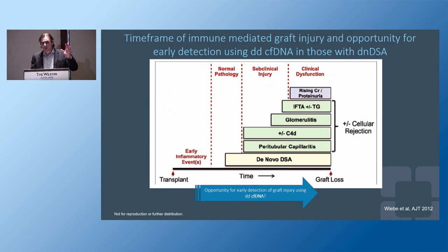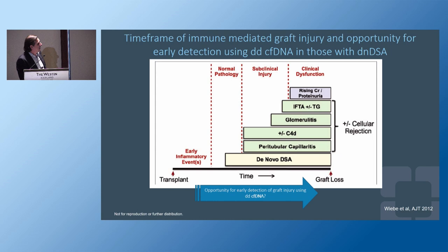This is a conceptual model: you get a kidney transplant, everything is fine with normal pathology early on, then you develop a DSA, and eventually some people develop capillitis and C4D deposition. Glomerulitis in the setting of rejection means it may be too late by the time you biopsy the patient. So there is perhaps an opportunity for early detection of graft injury in patients who develop a DSA.